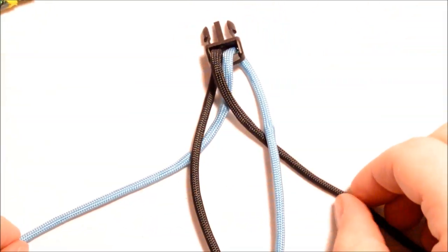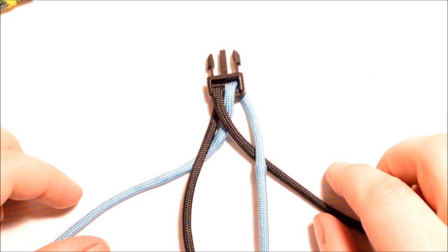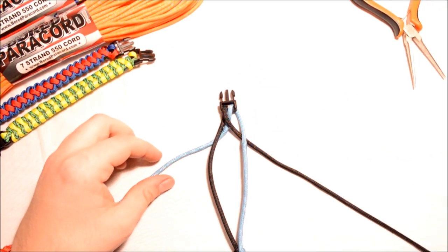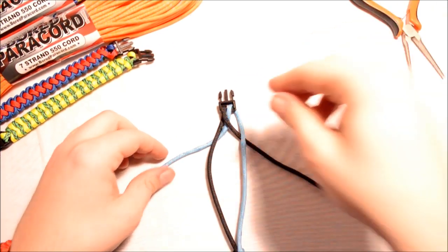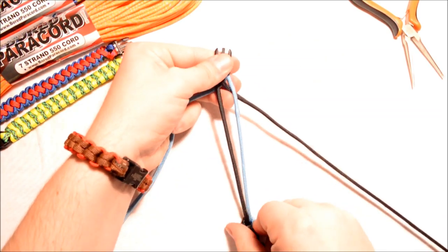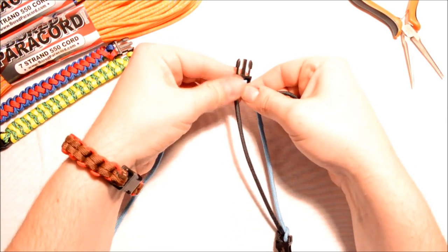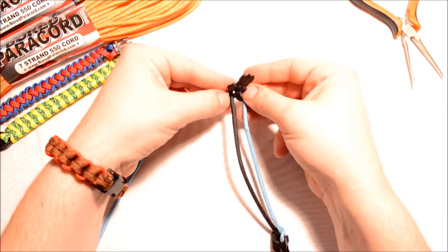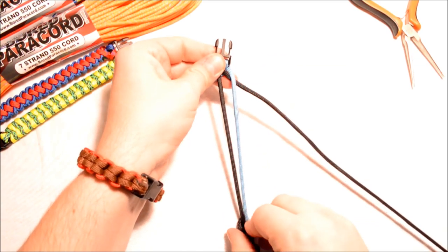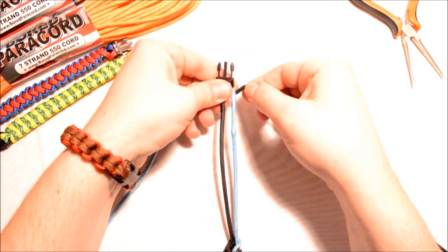Let me zoom in on that for you so you can see what we got here. So now we have the black coming off the right side, we got the tar heel blue coming off the left. And in order to keep this one nice and tight and keep it from getting away from you, use your thumb to hold everything down.